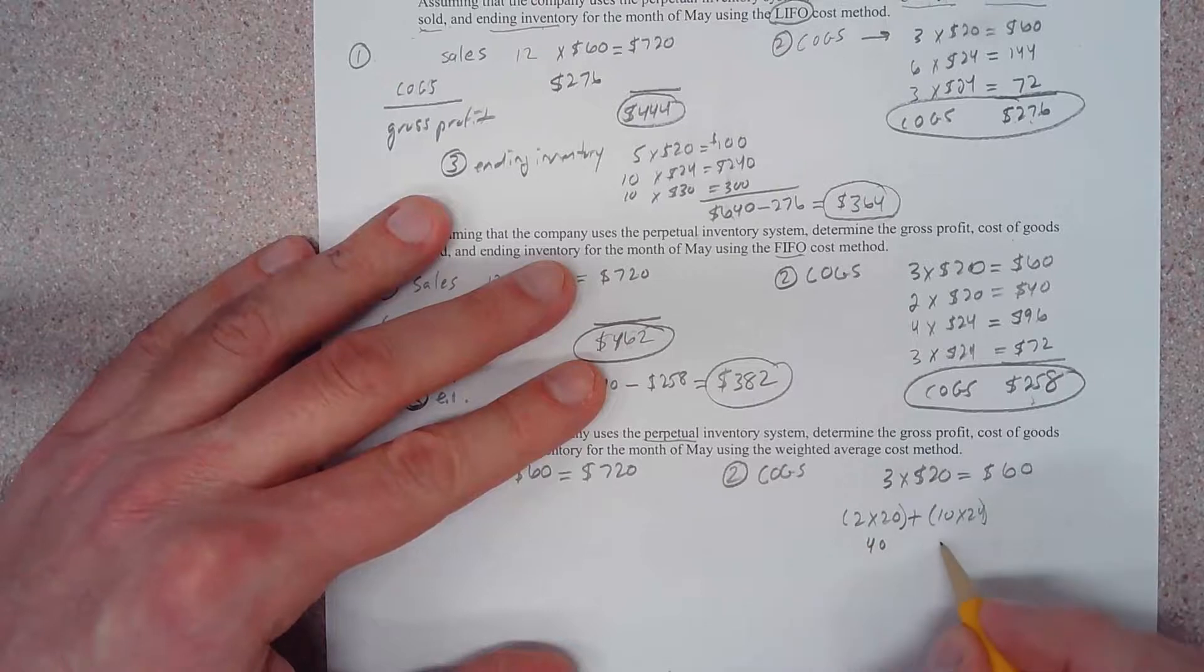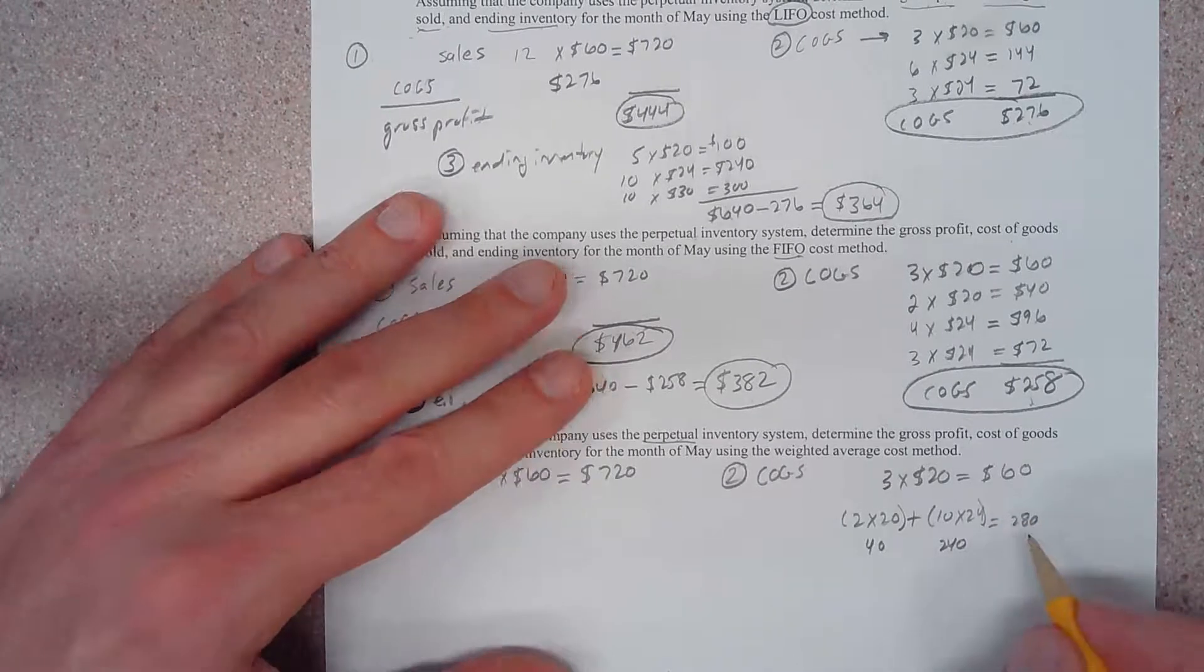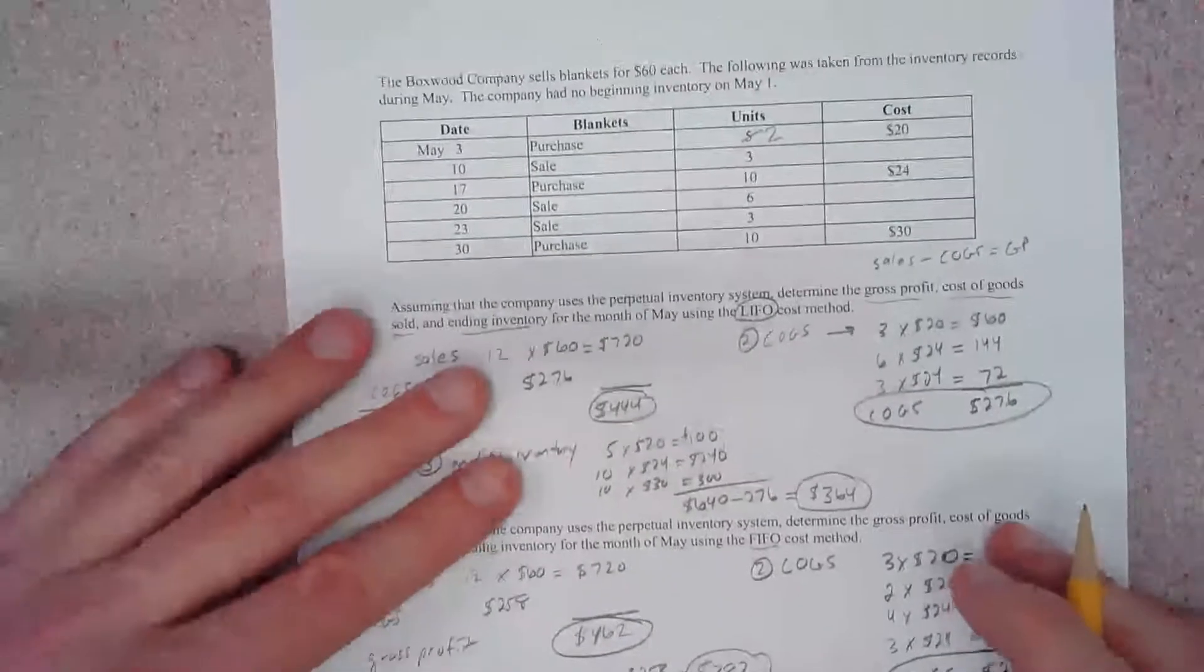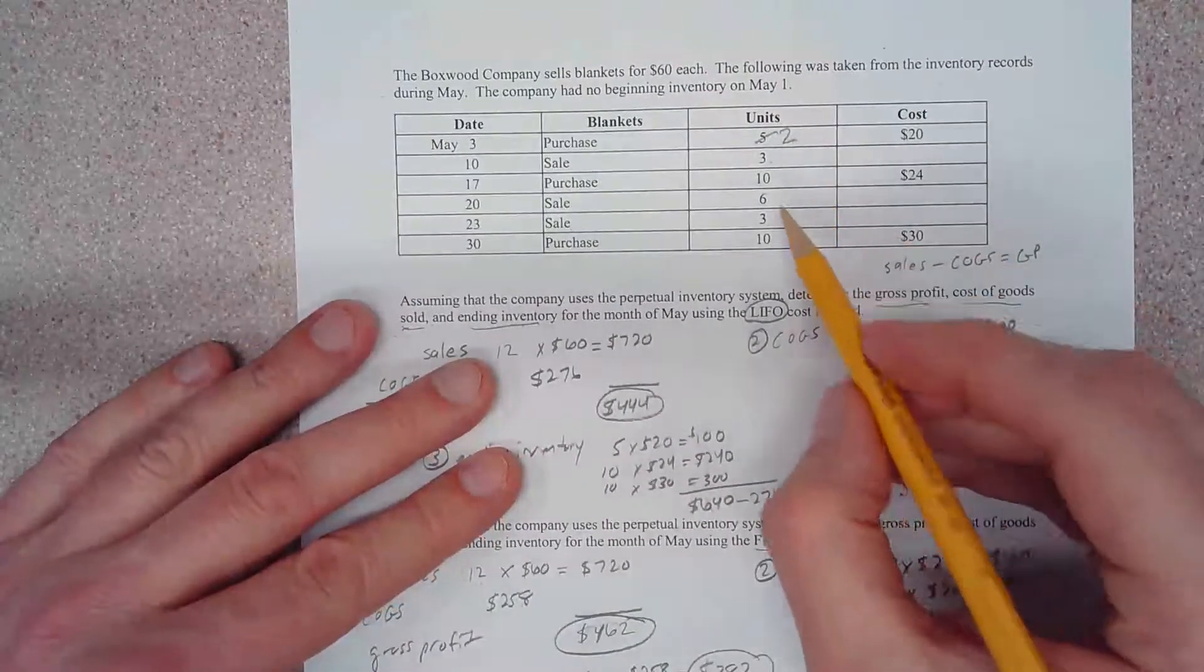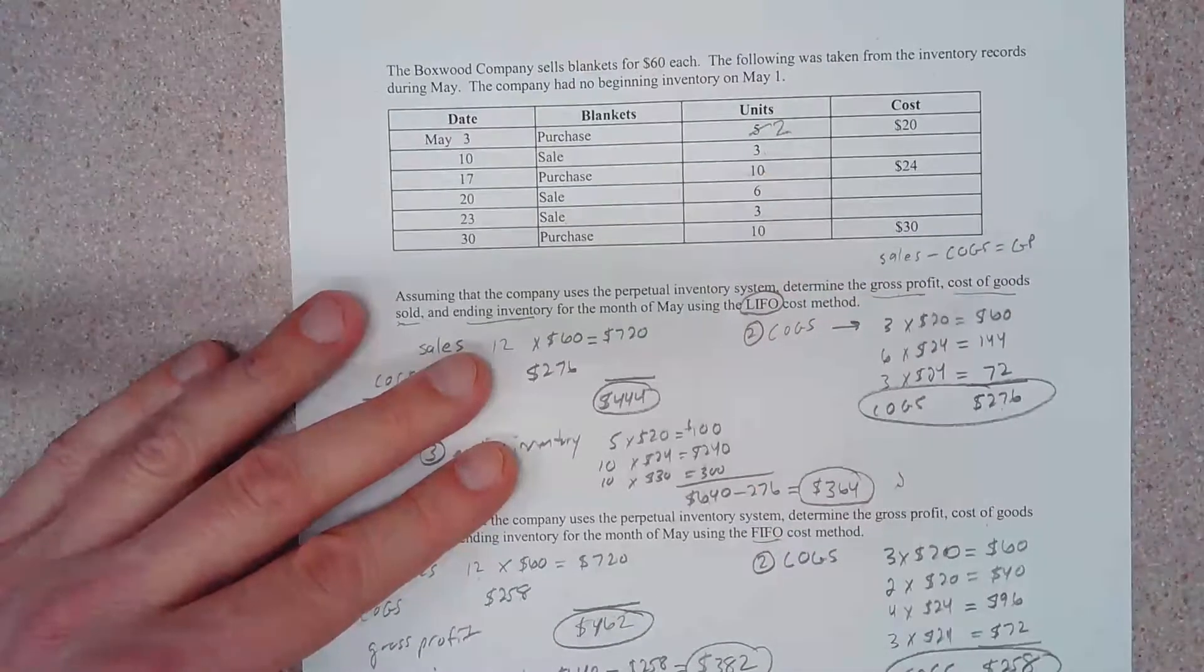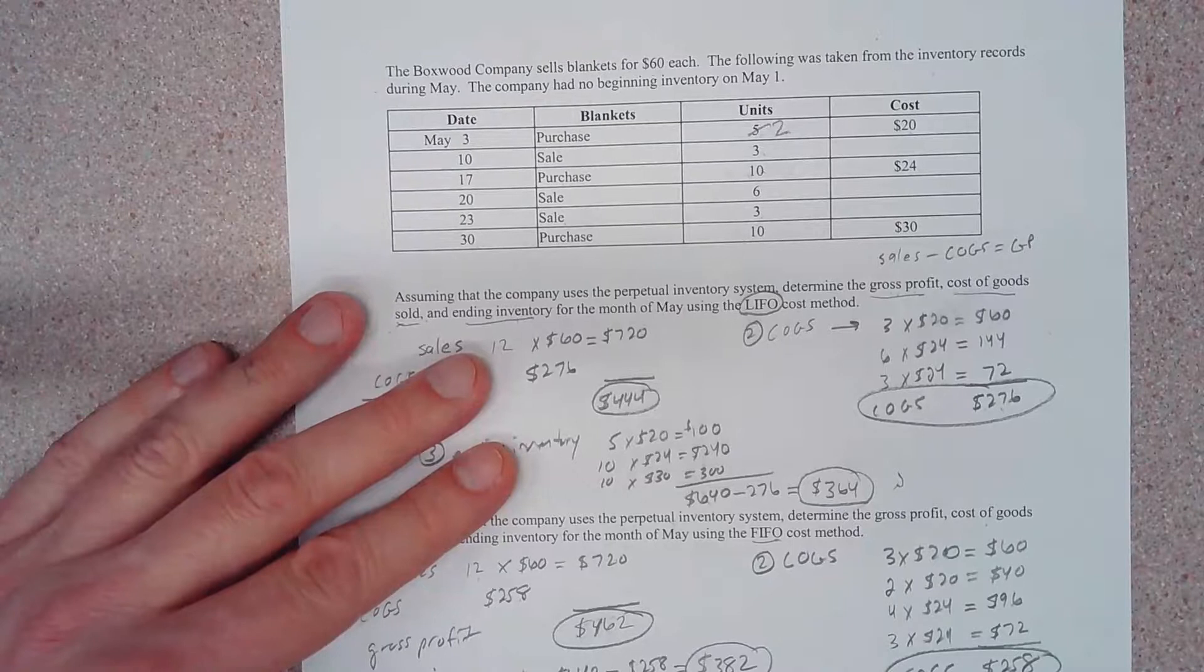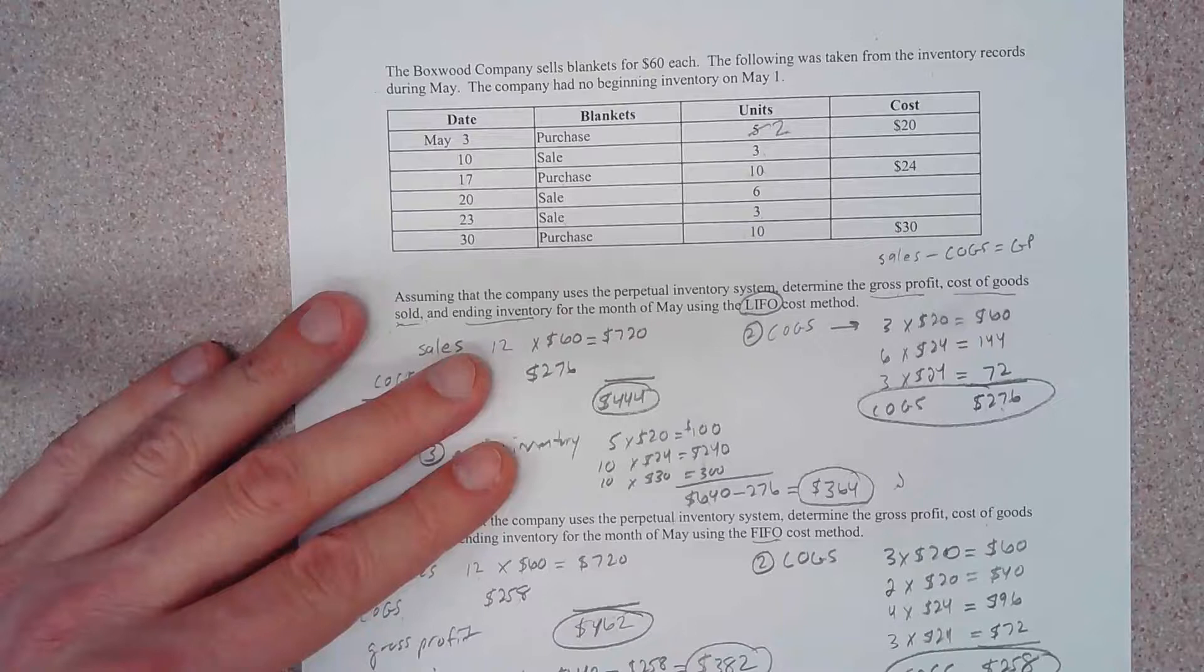We have to determine what our average cost and our inventory is on May the 20th. We have 2 remaining units because we sold 3, so we have 2 left. We have 2 units costing us $20 each, so 2 times $20. But then we also have 10 units at $20, so we have to calculate the average inventory value. We have $40 and $240 equals $280, and we're going to divide that by these 2 units and these 10 units, so divide by 12. That gives us an average cost of $23.33 each.